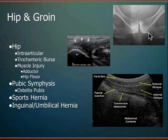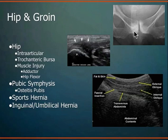Another common source of groin pain in athletes is osteitis pubis — chronic changes and inflammation at the pubic symphysis. The best way to work through the differential is to inject it, and it's a sensitive area requiring image guidance. You can see it quite well on ultrasound and use ultrasound guidance for those injections.